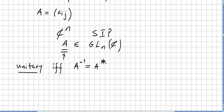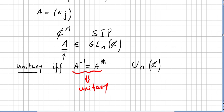When this condition holds — when the inverse equals the adjoint — we call the matrix A a unitary matrix. These unitary matrices belong to a group we call U(n), the group of all n×n unitary matrices.